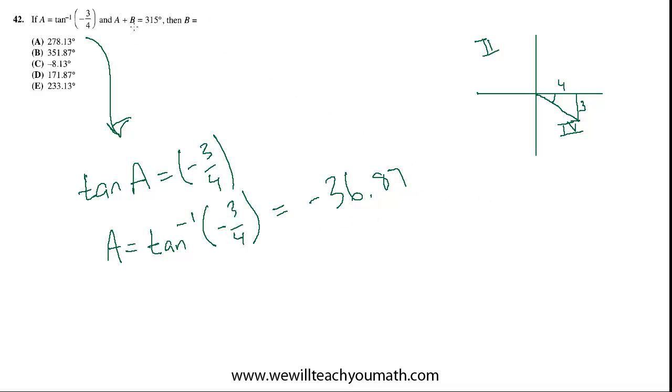And then as far as finding B, you're just solving this algebra equation. You have negative 36.87 for A plus B equals 315. So you just have to add over 36.87 to the other side, and you'll get B equals 351.87, which is answer choice B.